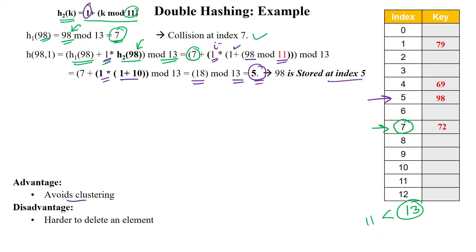Double hashing avoids the clustering issues that are possible in linear probing and also avoids the secondary clustering issue found in quadratic probing. However, it is a little bit harder to delete an element.